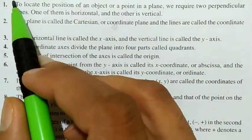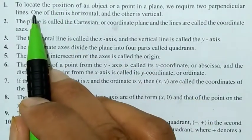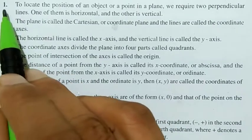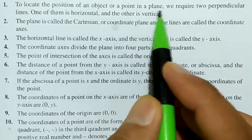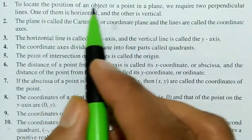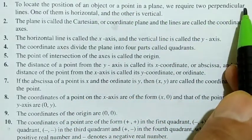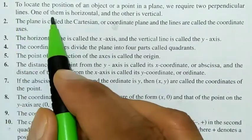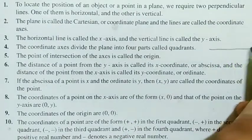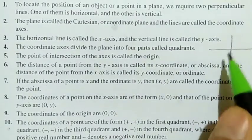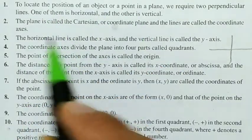Hello my dear students. In this video we will discuss Class 9 mathematics coordinate geometry — very important points for your exams and revision. First point: to locate the position of an object or a point in a plane, you require two perpendicular lines — one of them is horizontal and the other is vertical. These two perpendicular lines are required when you want to place any object or point in a plane.